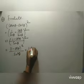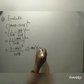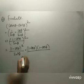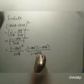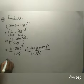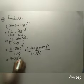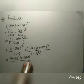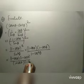This becomes (1 - cos θ)(1 - cos θ) divided by (1 - cos²θ). Since 1 - cos²θ = (1 + cos θ)(1 - cos θ), we write (1 + cos θ)(1 - cos θ) in the denominator.